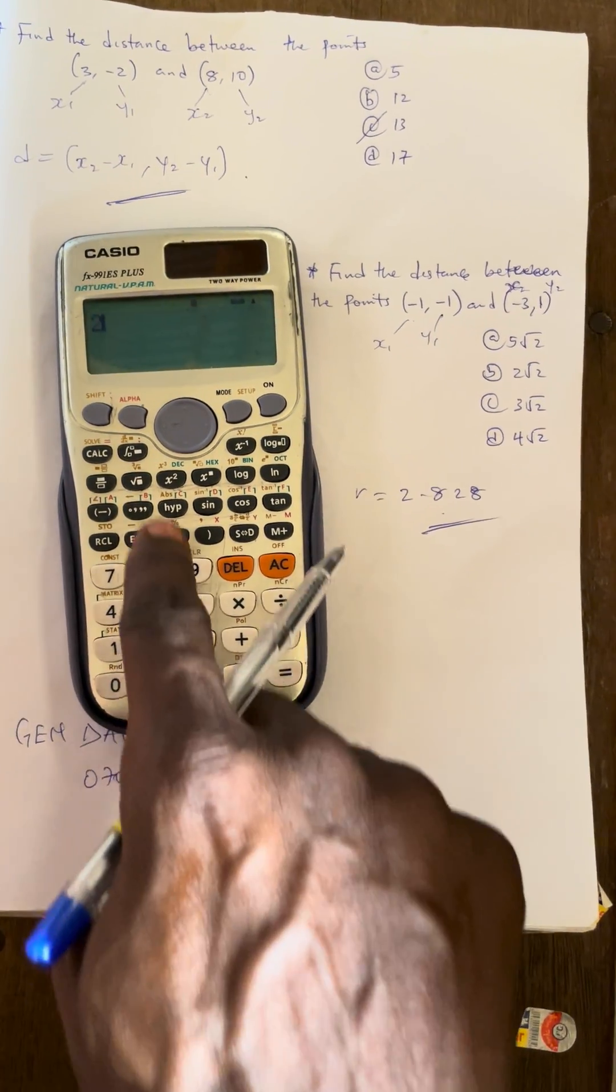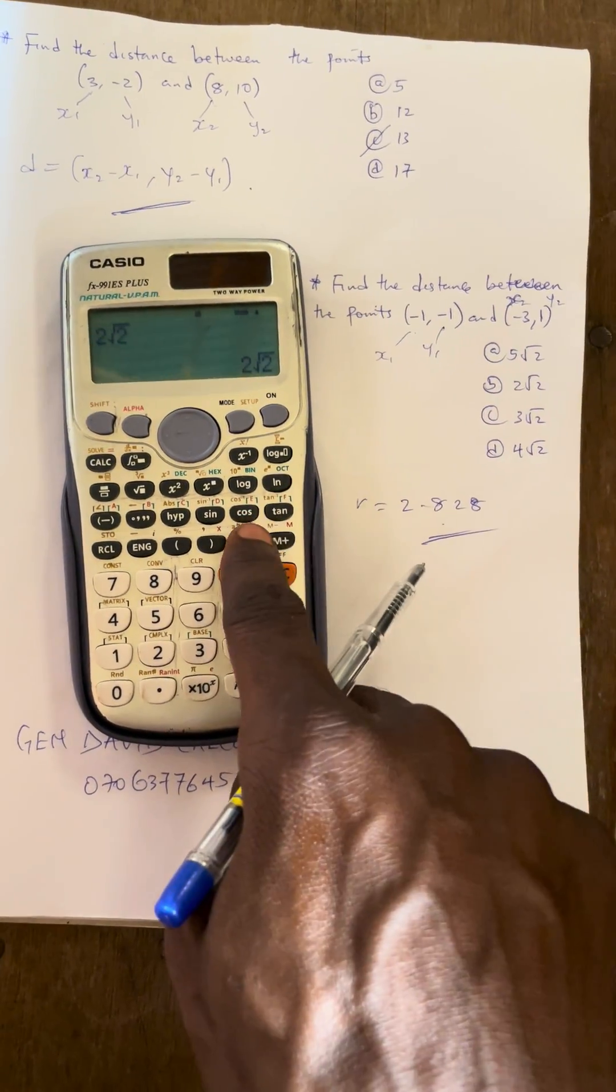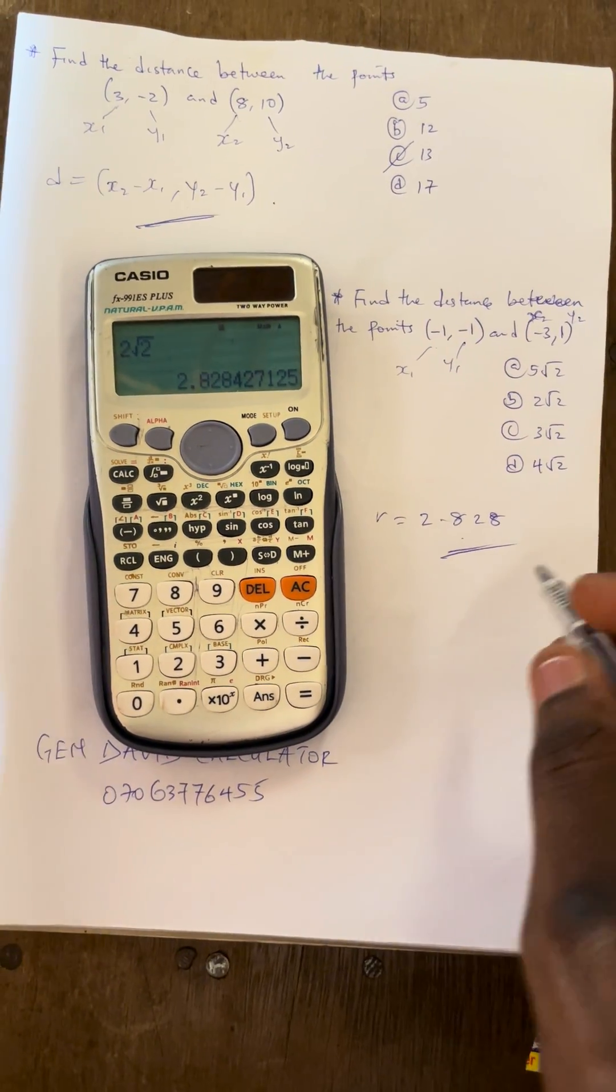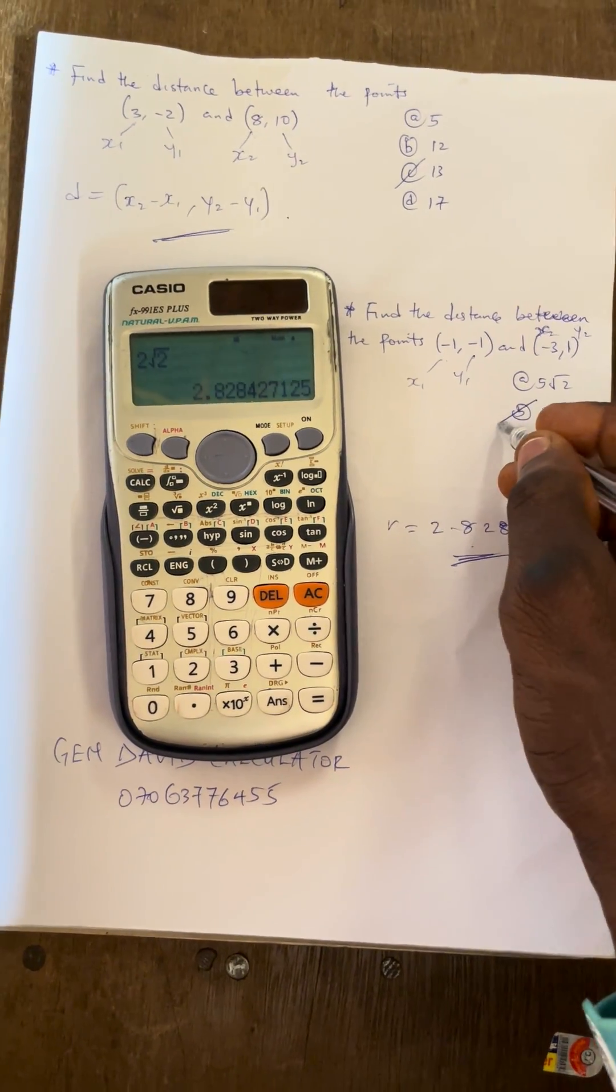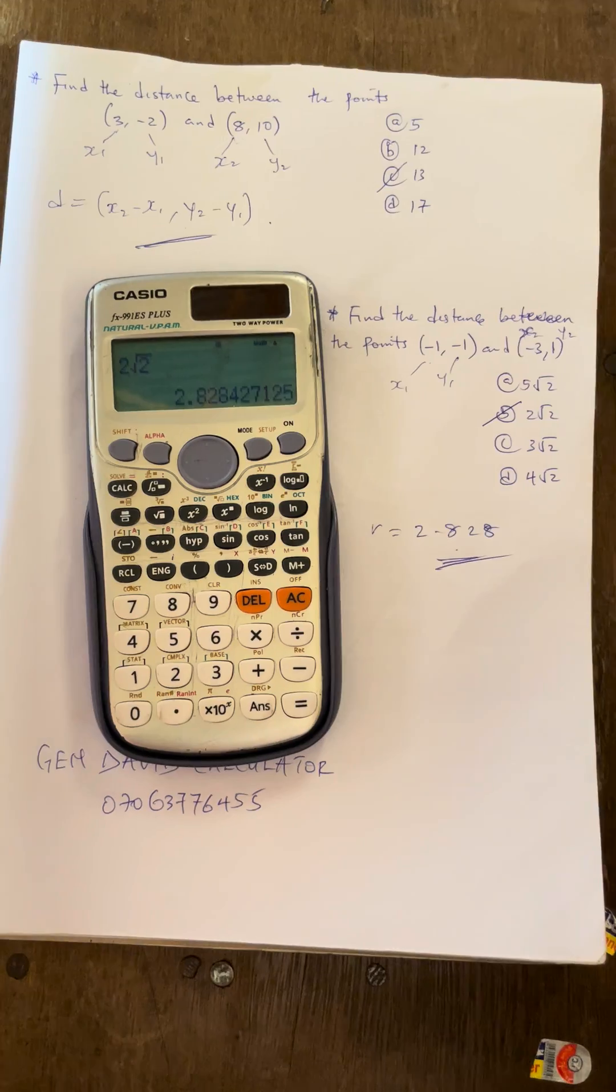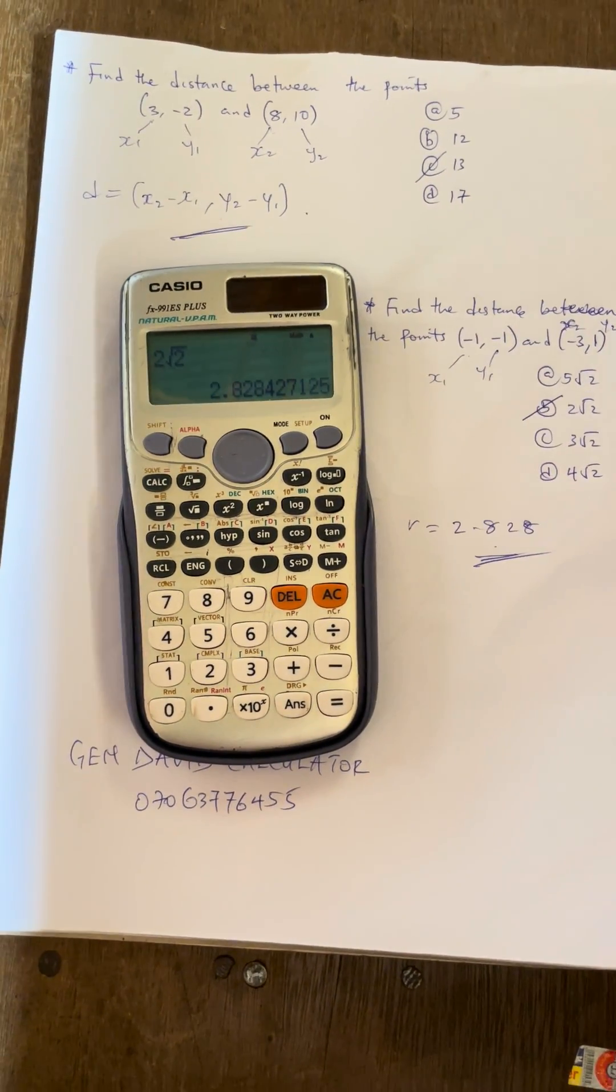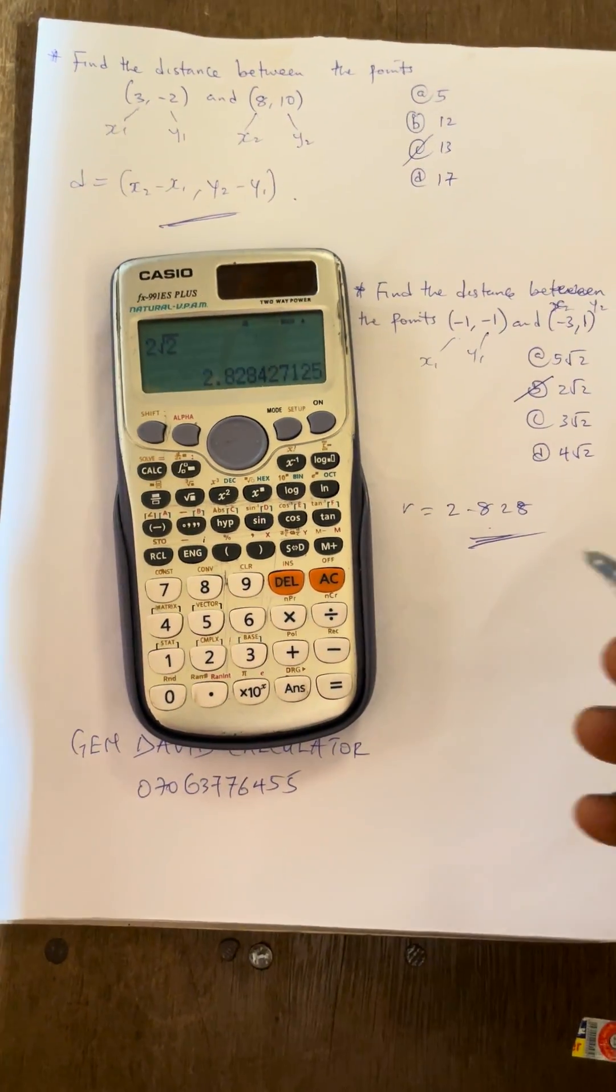Option B, which is 2 root 2. When you press equals 2, express it in decimal, and that is 2.82. You can see that the 2 root 2 is the one that is equal to the value of the distance we got, which makes the B to be the correct answer.